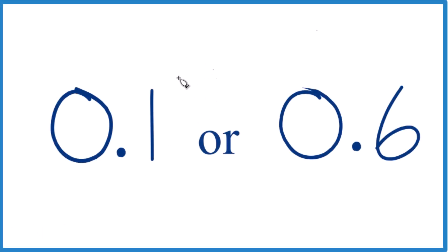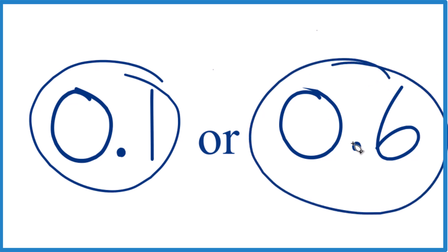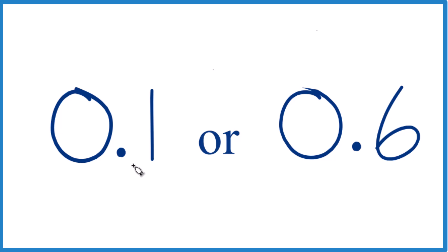So real quick, which one of these decimals is greater, 0.1 or 0.6? The way you do this, we're gonna look at the tenths place. That's the first number after the decimal. Here in the tenths place we have 1, and here we have 6. 6 is greater than 1, so 0.6 is greater than 0.1.